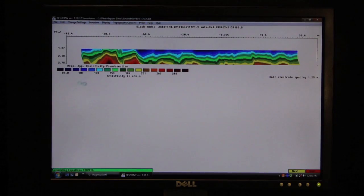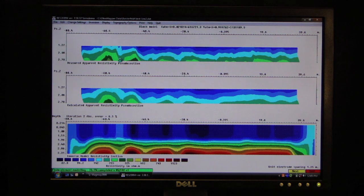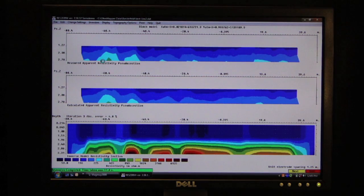Now what I'm going to do is I'm going to actually invert this data. I choose the least squares inversion. And what we see is it runs through a number of iterations. And this is the raw data. This is the inverted data.